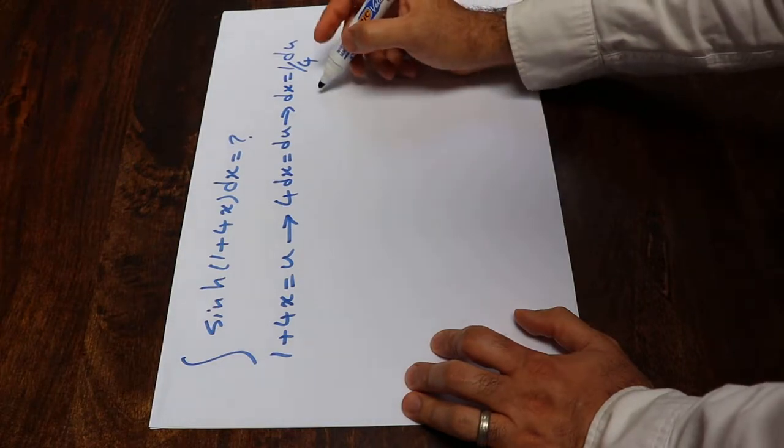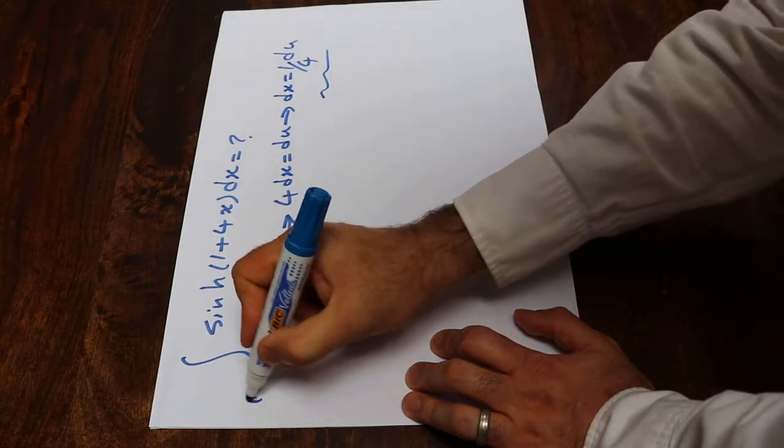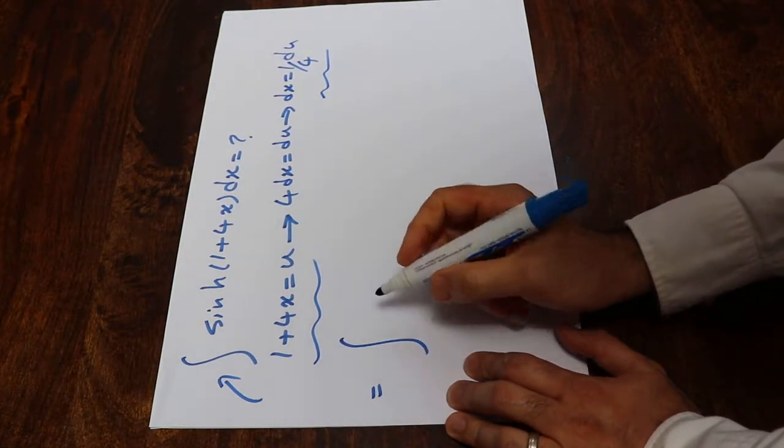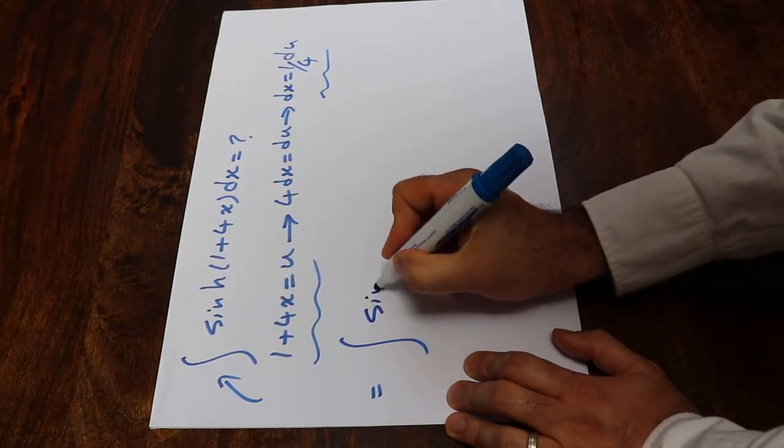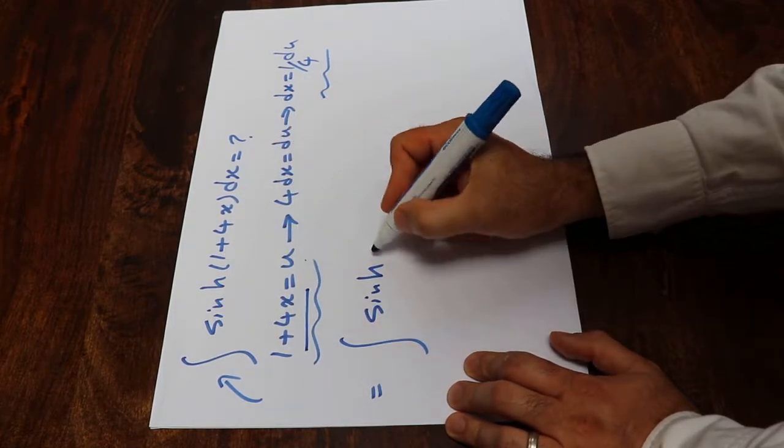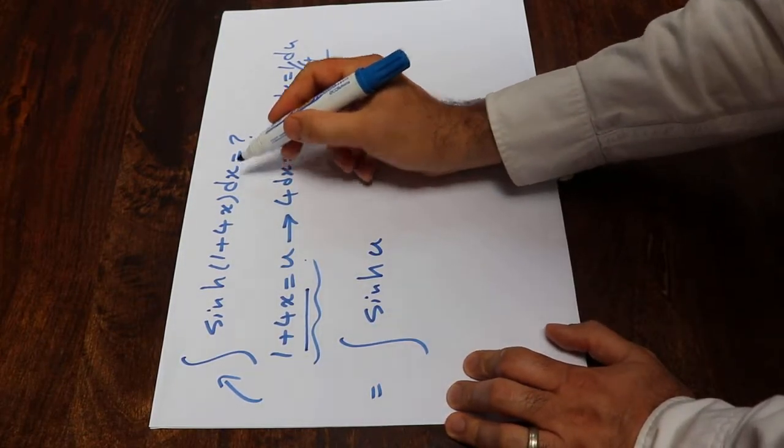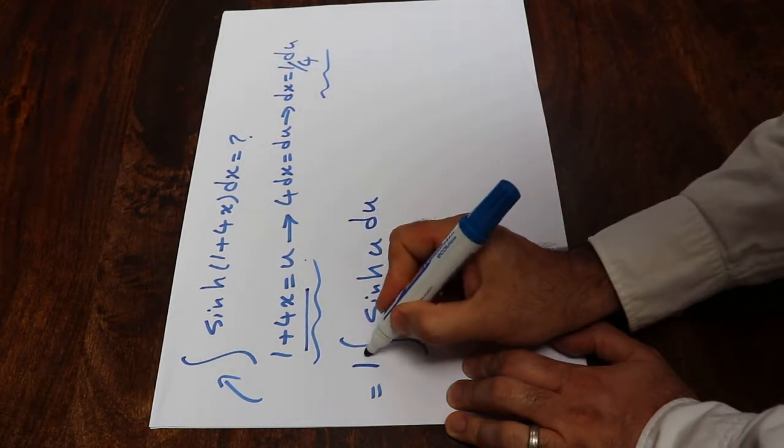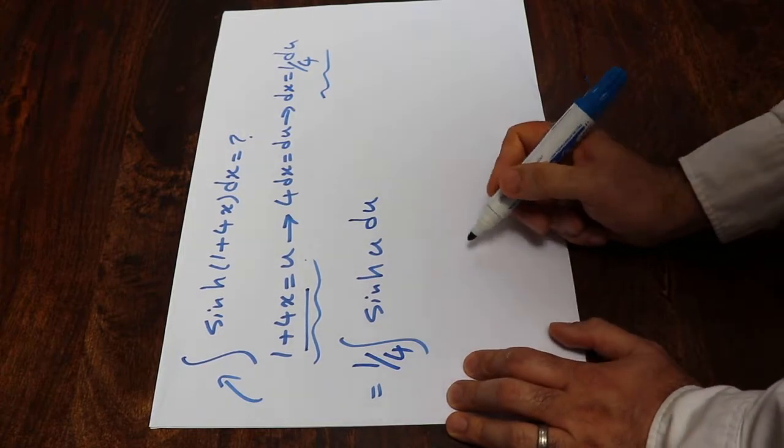All you need to do here is substitute these two expressions into this integral and rewrite it. That will be equal to integral of hyperbolic sine u, instead of 1 plus 4x, and instead of dx, I write 1 divided by 4 times du. 1 divided by 4 is constant, so I take it out of the integral.